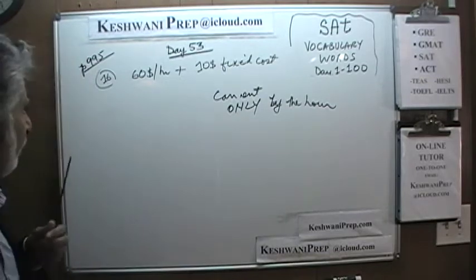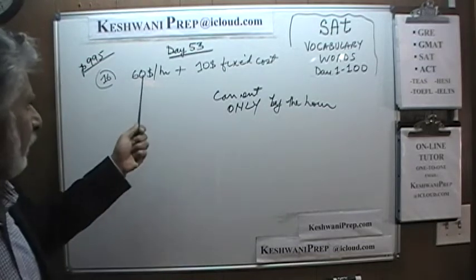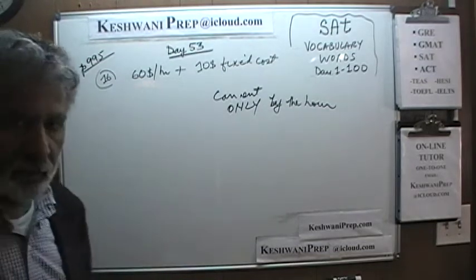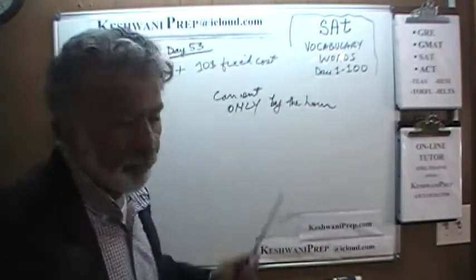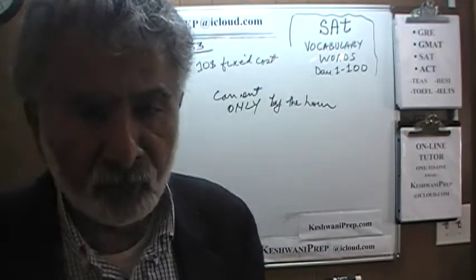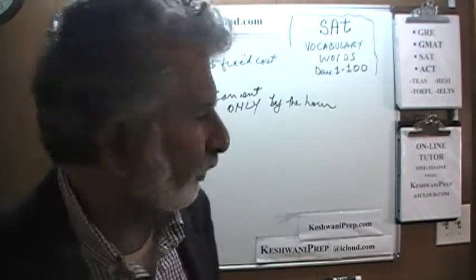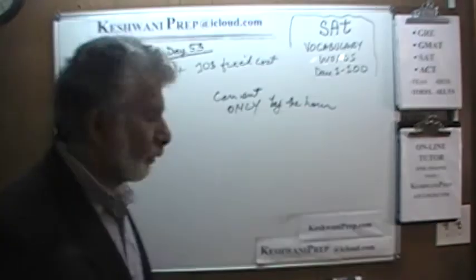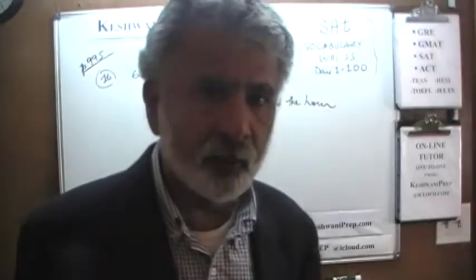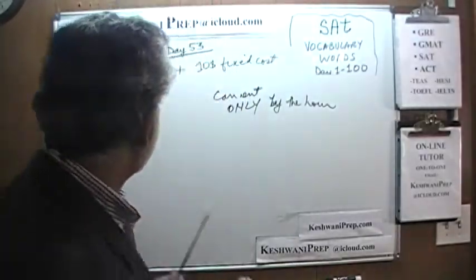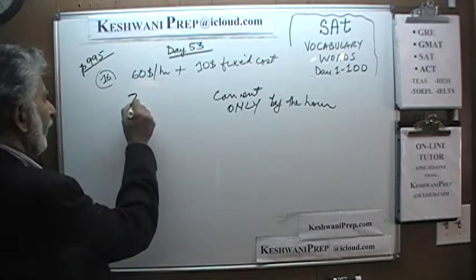Let's take a look at number 16. Number 16 says that we are going to rent a boat — a boat that is going to cost us $60 per hour in rental fee. In addition to $60 per hour in rent, we also have to pay $10 for some registration for a safety course. The question simply is: how many hours can I rent the boat if I only have $280?